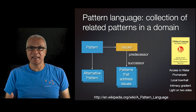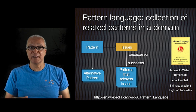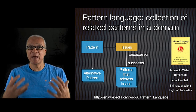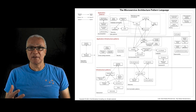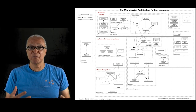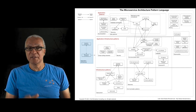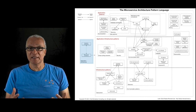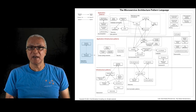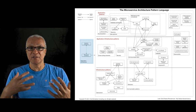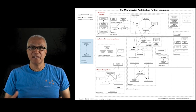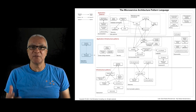Patterns related through predecessor-successor and alternative relationships form a pattern language — a collection of patterns that solve problems in a particular domain. Nine years ago, I created the microservices pattern language to help architects use microservices more appropriately and effectively. On the left are the monolithic and microservice architecture patterns as alternative architectures. All other patterns are successor patterns of the microservice architecture, solving problems created by using microservices.